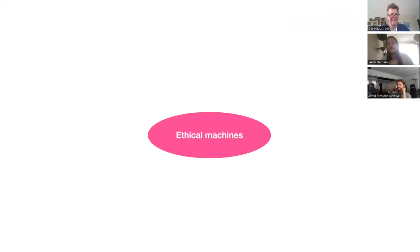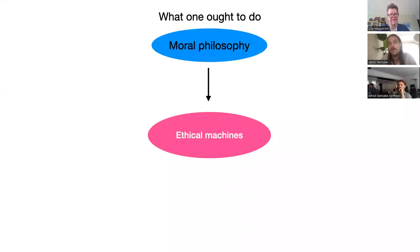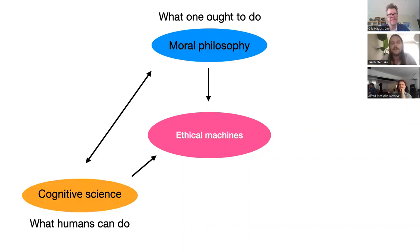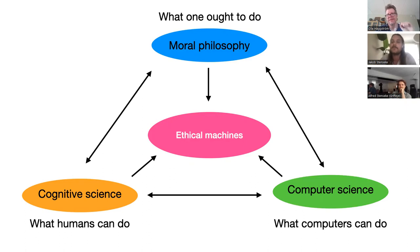I'll tell you a bit about the interdisciplinary space I'm working in. I'm working on ethical machines. I use moral philosophy to tell what one morally ought to do, cognitive science as a way of understanding what humans can do, and computer science for what computers can do. There are some really fruitful synergies in how they can constrain and bring insights to one another.